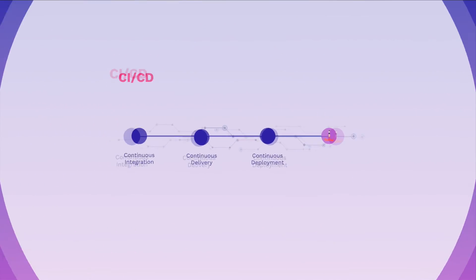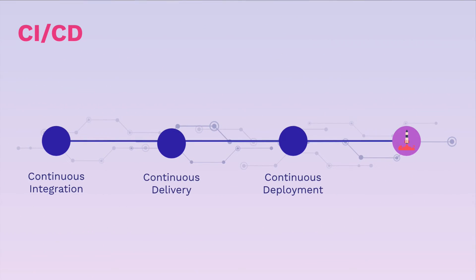After we've tied everything together and created the overall picture of how to write good software and good applications, we're then going to talk about how to actually create good processes, how to actually deploy to production. We're going to talk about good continuous integration practices, and also about continuous delivery and continuous deployment.